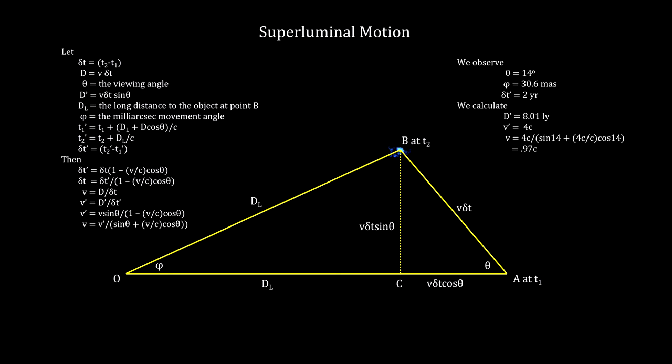If we plug in the numbers we found for knot C in the M87 jet, we find that the apparent velocity of four times the speed of light turns out to be 0.97 times the speed of light in the object's frame of reference.